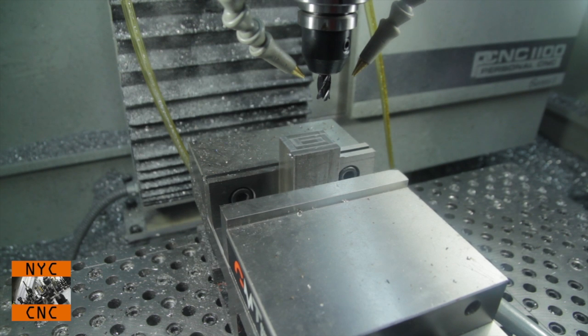We've got our part in the vise. I faced off the top so we've got a nice smooth surface. We're using a 3 eighths inch four flute carbide end mill, and let's make some chips.